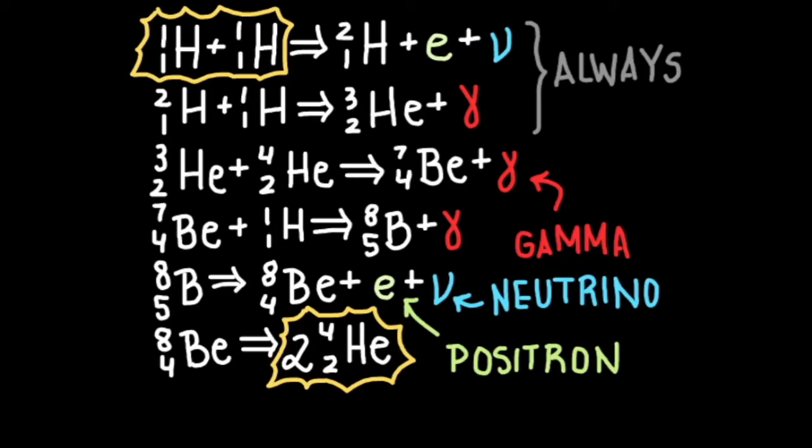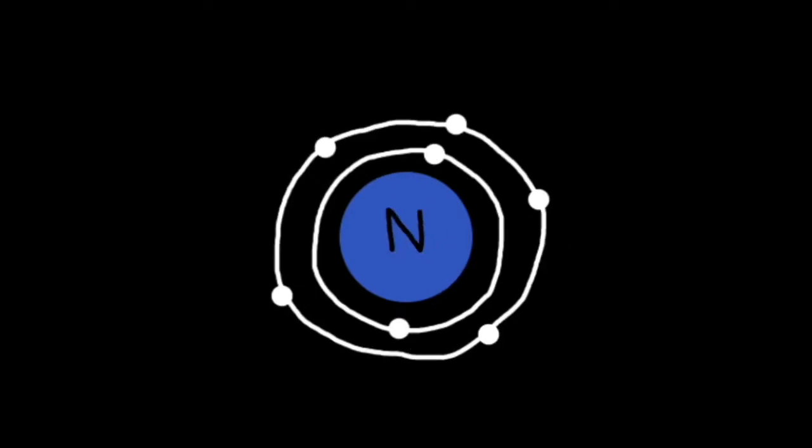So what about more massive stars? These stars involve heavier elements — namely carbon, nitrogen, and oxygen — as catalysts for energy production. Based on the elements involved, you can probably guess which fusion process is applicable for more massive stars: the CNO cycle.